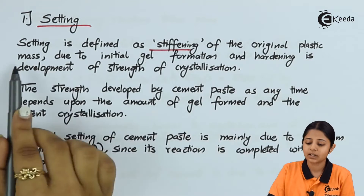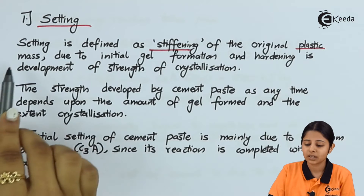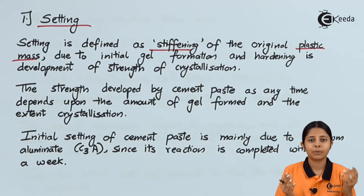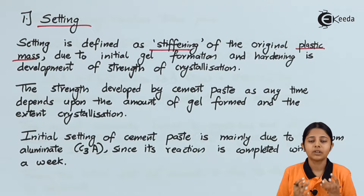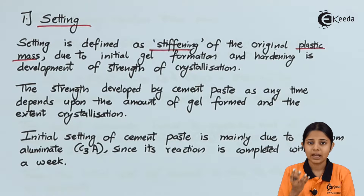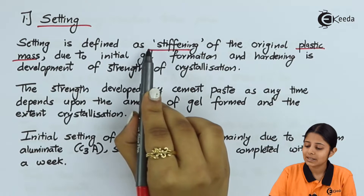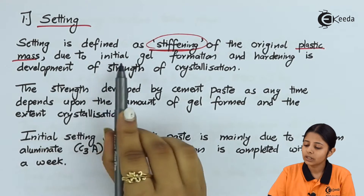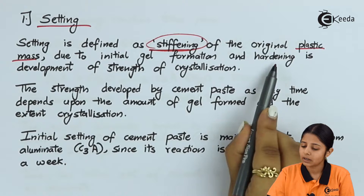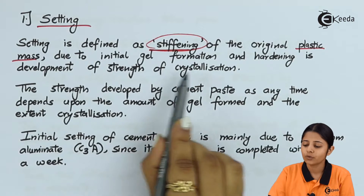Setting is defined as the stiffening of the original plastic mass. We first make a plastic mass or cement base by mixing the proper proportion of water with cement to form a paste. This plastic mass must stiffen at the place where it is kept, and that property is known as setting, which is also referred to as stiffening due to the initial gel formation.